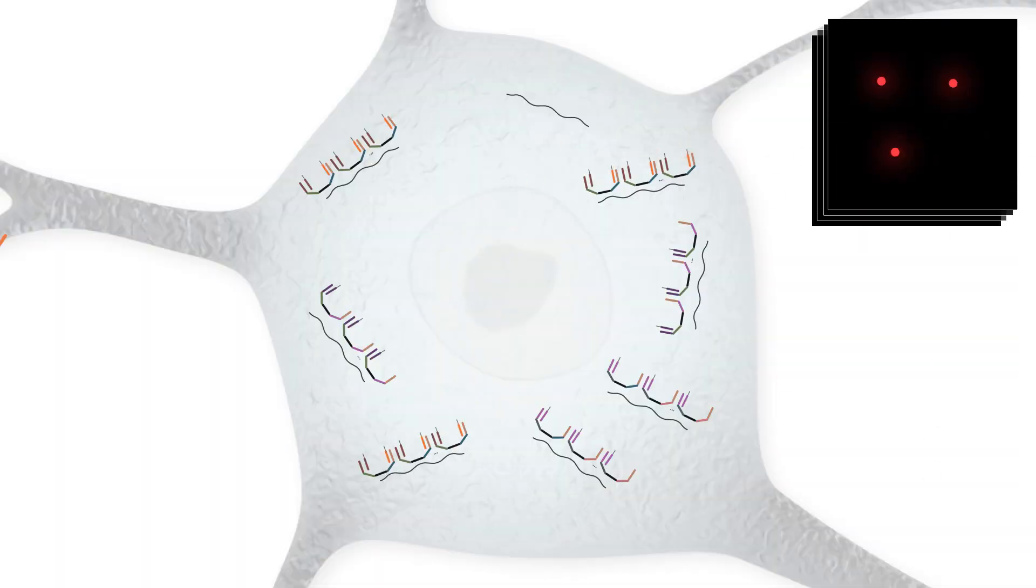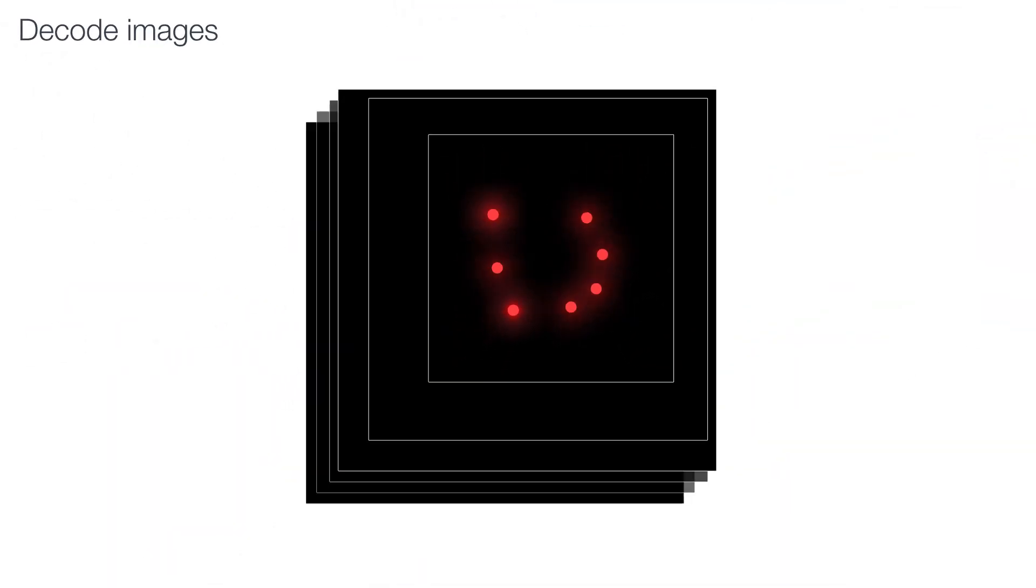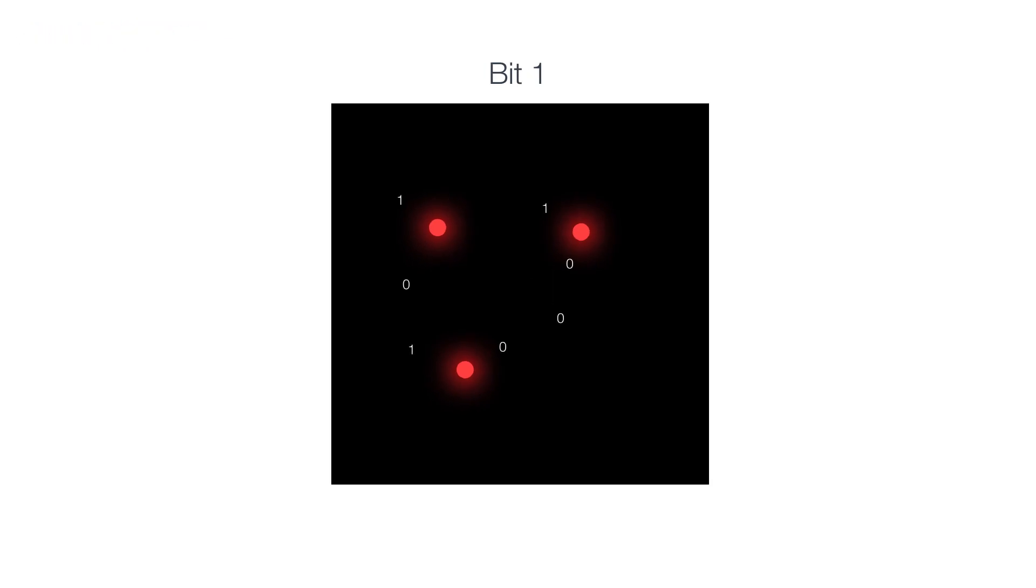With each imaging round, if a fluorescent signal is detected, it represents a 1 at the corresponding bit position. If there is no signal on that molecule, it is a 0.